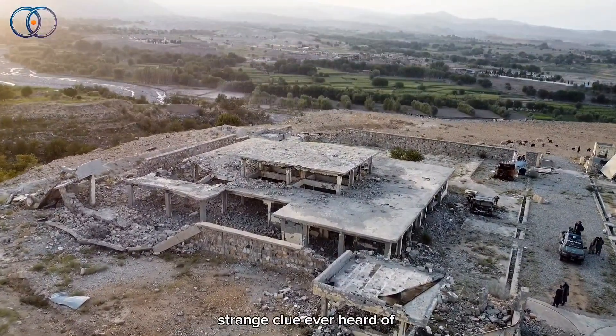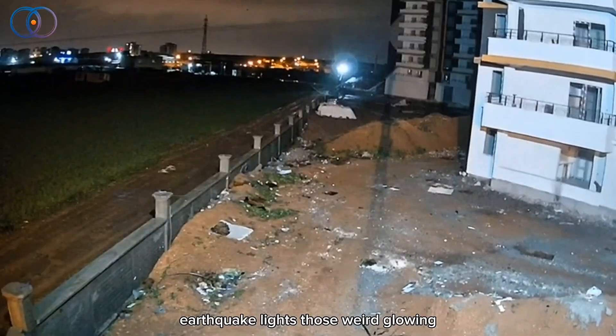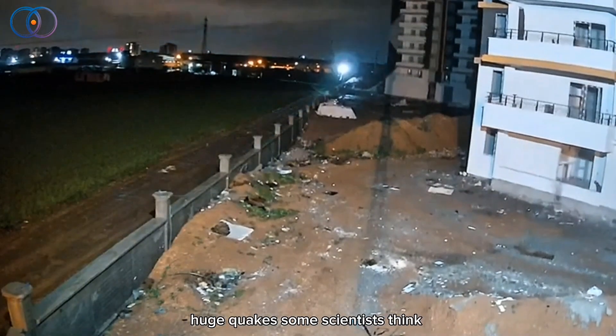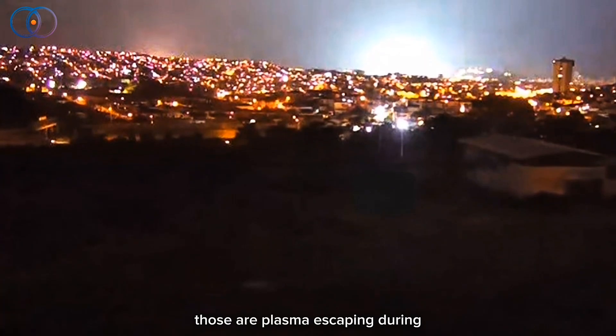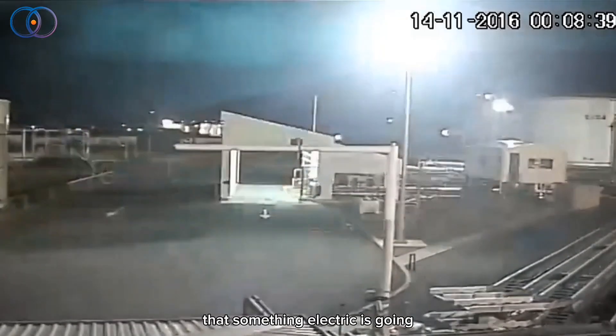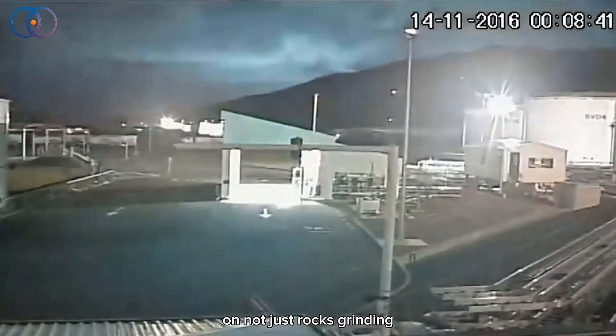And here's another strange clue, ever heard of earthquake lights? Those weird glowing lights people sometimes see during huge quakes. Some scientists think those are plasma escaping during a quake. Like literal proof that something electric is going on, not just rocks grinding together.